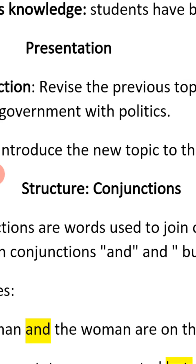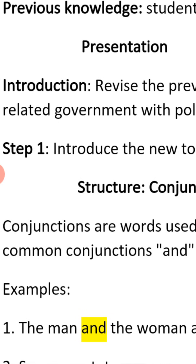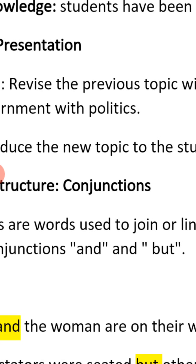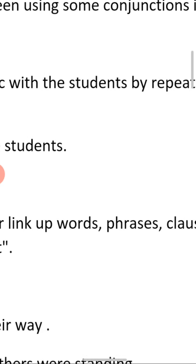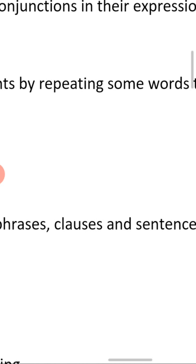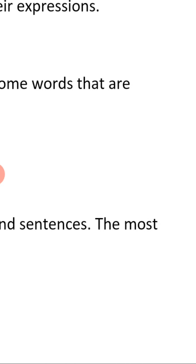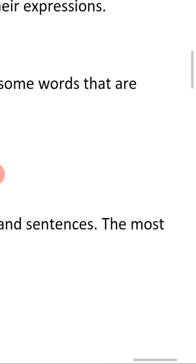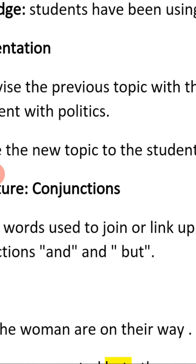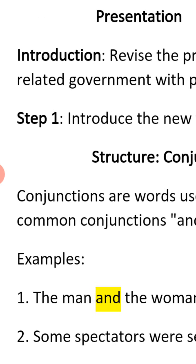First and foremost, what do we mean by conjunctions? Conjunctions are words used to join or link words, phrases, clauses, and sentences. The most commonly used conjunctions are 'and' and 'but' — these are the conjunctions that are used most often.